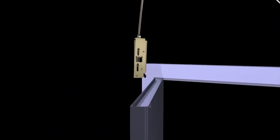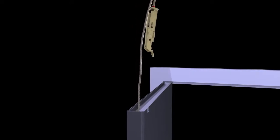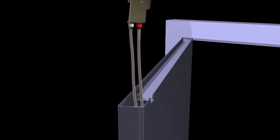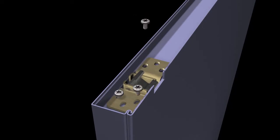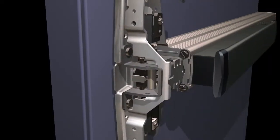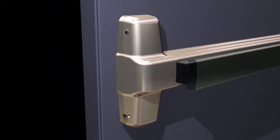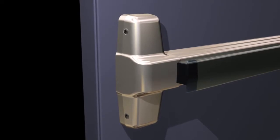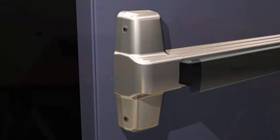Installing Von Dupren's concealed vertical cable system with a 9899-series or 3335A-series exit device is much different than working with traditional concealed rods. The process is faster and simpler, and once installation is complete, the cable system attaches to the exit device at a single point. In addition, the process of installing the exit device to the door and hanging the door to the frame does not change.